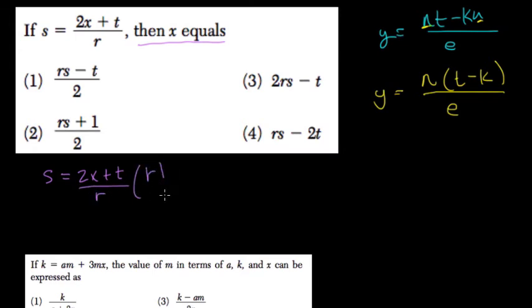I would multiply both sides by r to get rid of that denominator. So you go with numbers. So rs equals 2x plus t.